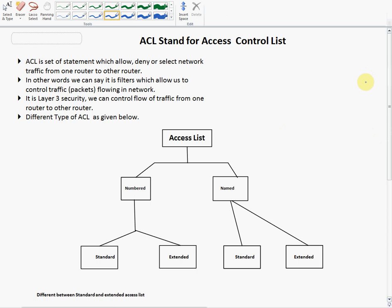There are different types of ACL. We have numbered and named ACLs. In both numbered and named, we have two types each. In numbered, we have standard and extended. Same thing in named — we also have standard and extended.